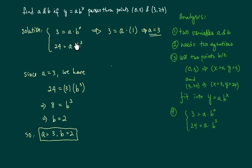Grabbing a equal to 3, I'm going to substitute into the second equation. We have 24 equal to 3 times b to the third, divided by 3 on both sides, so we can see b is equal to 2. So the two variables, we have a equal to 3 and b is equal to 2.